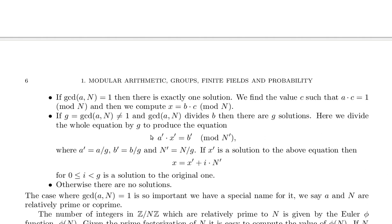Here we divide the whole equation by G to produce the equation a prime times x prime equals b prime mod n prime, where a prime is a divided by G, b prime is b divided by G, and n prime is n divided by G.